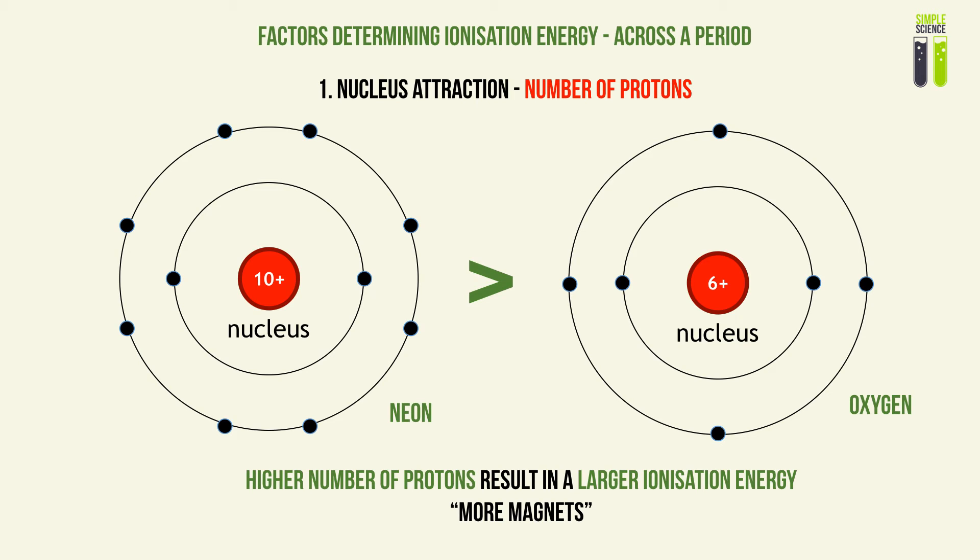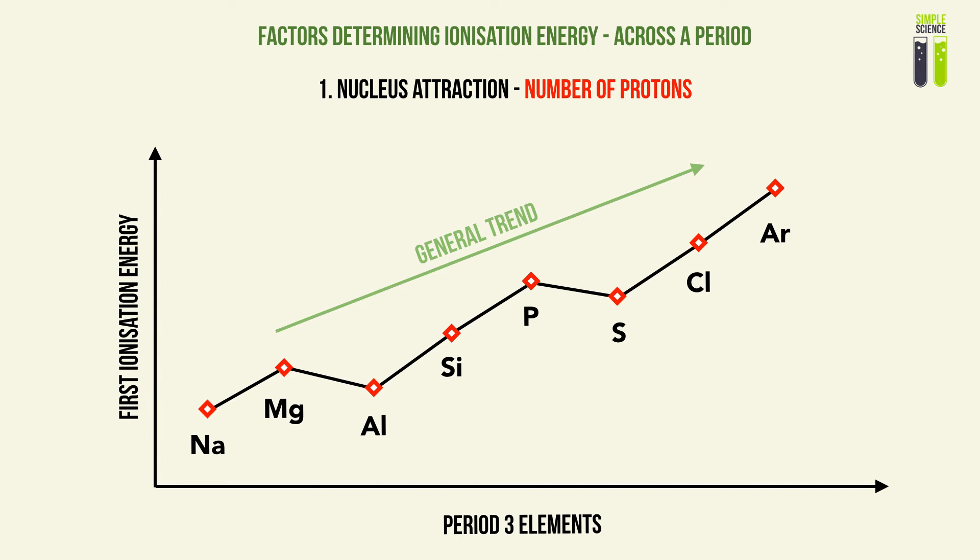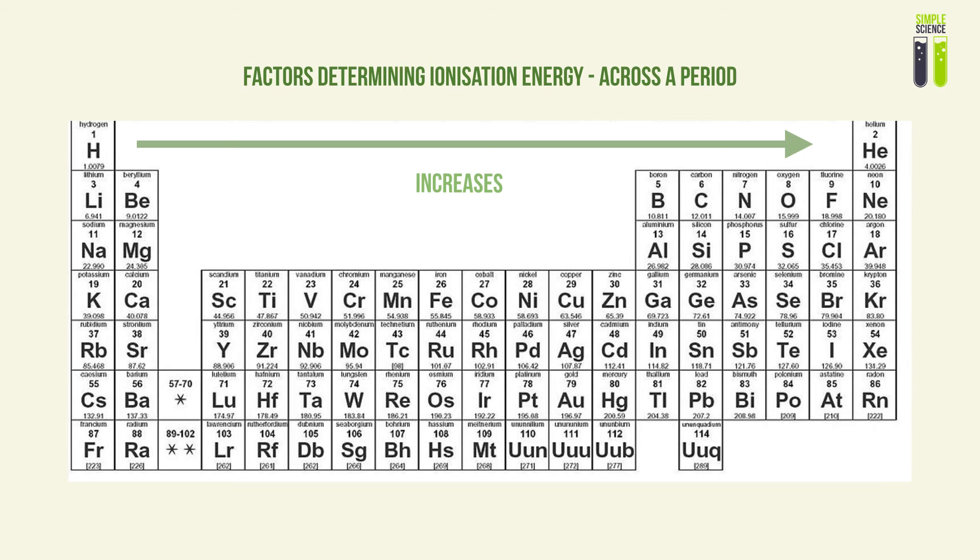The idea of more attraction sources for that one electron explains why this is so. Looking across Period 3, as we go across the period and the number of protons increases, the ionization energy generally increases. However, there are kinks — such as the drop between magnesium and aluminium, and between phosphorus and sulfur. We will talk about those exceptions and explain how they work in the next video. Overall, we can conclude that ionization energy increases generally across the period.